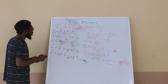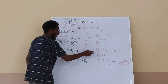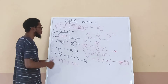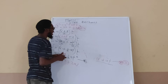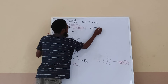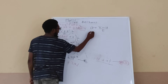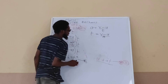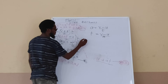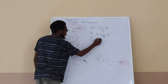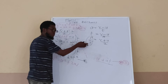To derive v² = u² + 2as, I go back to the definition of acceleration and make t the subject of the formula. From a = (v − u) / t, I get t = (v − u) / a. I then substitute this expression for t into the average velocity equation s = (v + u) / 2 × t.